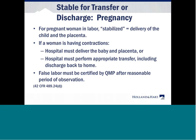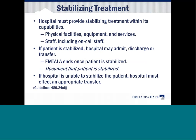The hospital must provide stabilizing treatment within its capabilities — meaning physical facilities, equipment and services available to the hospital, and appropriate staff including on-call staff. If the patient is stabilized, the hospital may admit, discharge, or transfer the patient. EMTALA ends once the patient is stabilized, but document it. If the hospital is unable to stabilize the patient, it must effect an appropriate transfer. If the patient is not stabilized, the hospital may not transfer or discharge the patient home unless one of two criteria is satisfied.